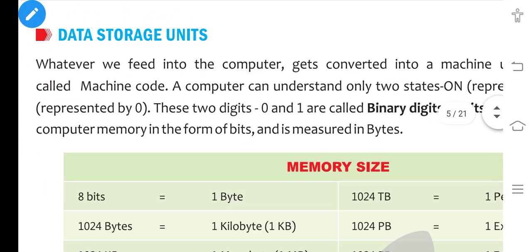Whenever we measure anything, we need units. Whatever data is stored in the computer also has units, by means of which we can measure the data fed into the computer. Data entered into the computer gets converted into machine code, and the computer understands only two states: on and off. On is represented by one and off is represented by zero.